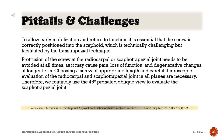Pitfalls and challenges: To allow early mobilization and return to function, it is essential that the screw is correctly positioned into the scaphoid, which is technically challenging but facilitated by the transtrapesial technique. Protrusion of the screw at the radiocarpal or scaphotrapezial joint needs to be avoided at all times, as it may cause pain, loss of function, and degenerative changes in the longer term. Choosing a screw of appropriate length and careful fluoroscopic evaluation of both joints in all planes are necessary. We routinely use the 45-degree pronated oblique view to evaluate the scaphotrapezial joint.